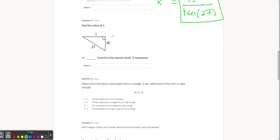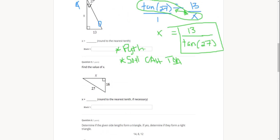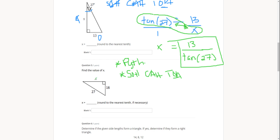What about question five? Do I use sine, cosine, tangent, or Pythagorean theorem? How do I know the difference? Here I have all three sides — if you've got three sides, use Pythagorean theorem. If you have an angle, use trig — you can only use trig with an angle. You can use two sides to find an angle with trig, or use an angle to find a side. But for SOH CAH TOA, you have to have an angle or want an angle. If all you have is sides, use Pythagorean theorem.